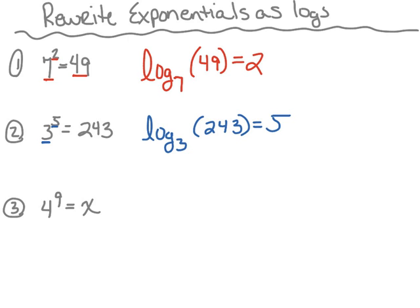Let's try number 3: 4 to the 9th power is equal to x. We're going to rewrite this as a log. The base we're going to use here is 4 — that's this right here. The argument this time is x, and it equals to the exponent, which is 9. So we read this as log base 4 of x equals 9.